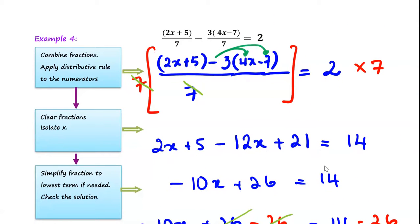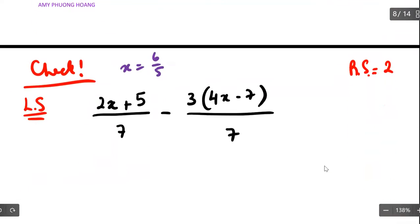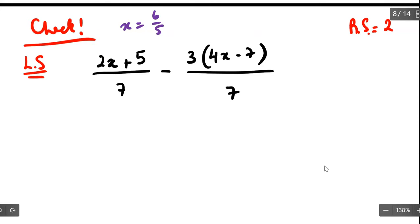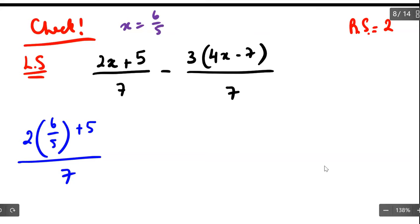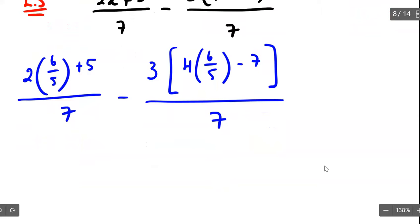For this particular fractional equation, this is the only method I recommend. I would like to perform the check steps to see whether or not the left hand side equals the right hand side, and we are going to approach it without the use of calculators. So it's 2 times 6 over 5 plus 5, the whole thing divided by 7, subtract 3 multiplied by 4 times 6 over 5 subtract 7, over 7.